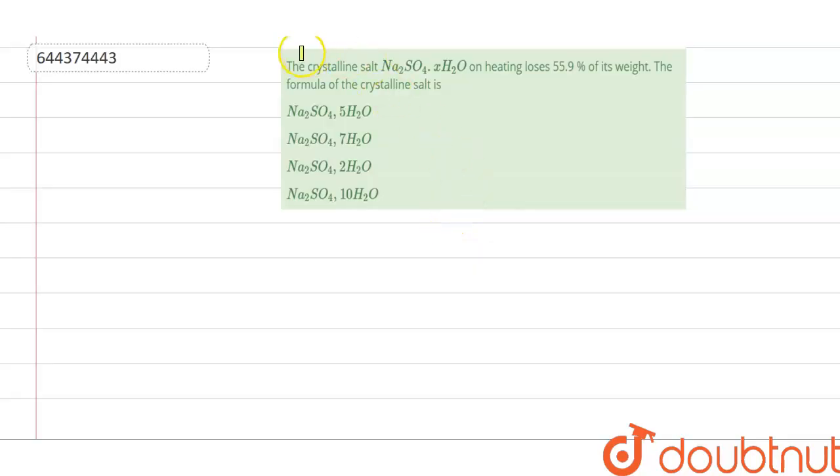Hello everyone. The question is the crystalline salt Na2SO4·XH2O on heating loses 55.9% of its weight. We have to calculate the value of X, that is the number of molecules of water of crystallization which is associated with sodium sulfate. Four options are given. We have to find the answer.